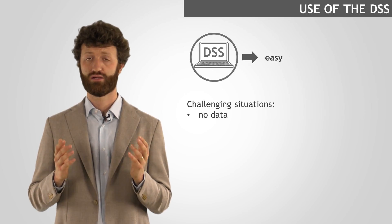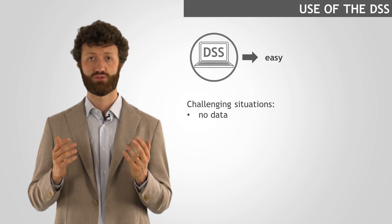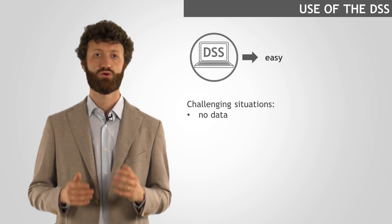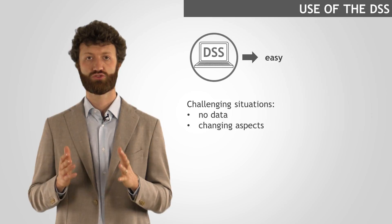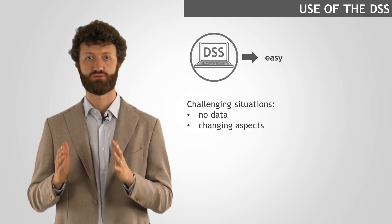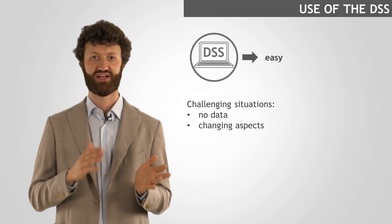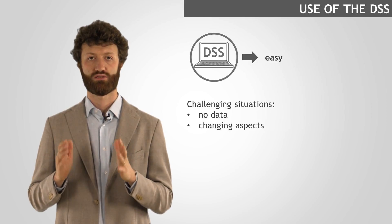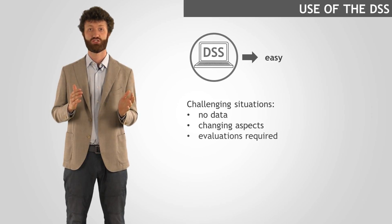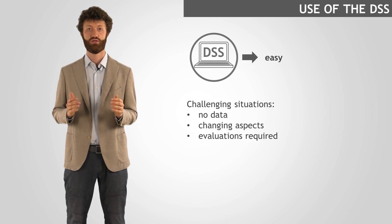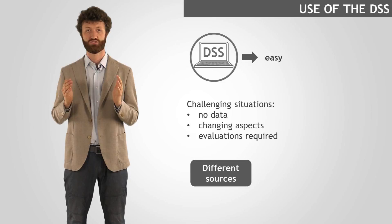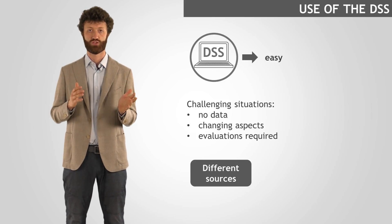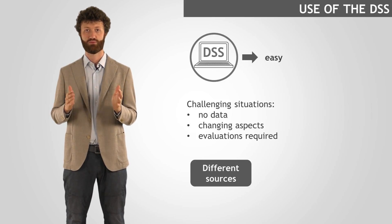For example, some data are impossible to collect, as that would require too much time and money or entail risks for surveyors. Other aspects change continuously or are very difficult to generalize, thus any findings will be quite uncertain. Finally, some evaluations are required, thus some degree of subjectivity is introduced. A good way forward is to include different sources of information in order to triangulate findings and to support them with some evidence.